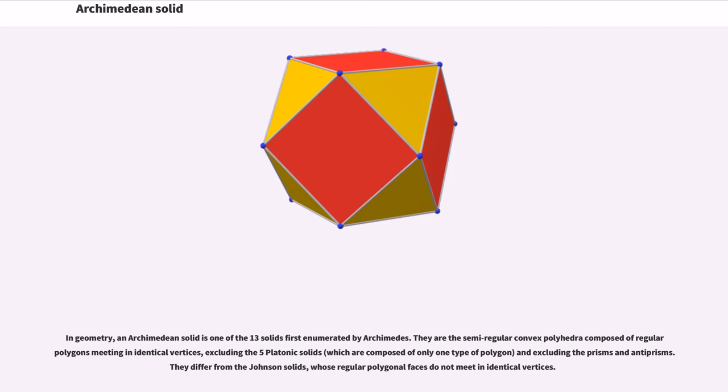In geometry, an Archimedean solid is one of the thirteen solids first enumerated by Archimedes. They are the semi-regular convex polyhedra composed of regular polygons meeting in identical vertices.